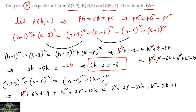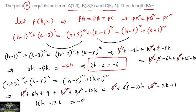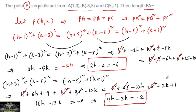Cancelling h² and k² terms, we get 6h − (−10h) = 16h, and −10k − 2k = −12k. For constants: 25 cancels, and 9 − 1 = 8, giving 16h − 12k = −8. Taking out the factor of 4, we get the second equation: 4h − 3k = −2.